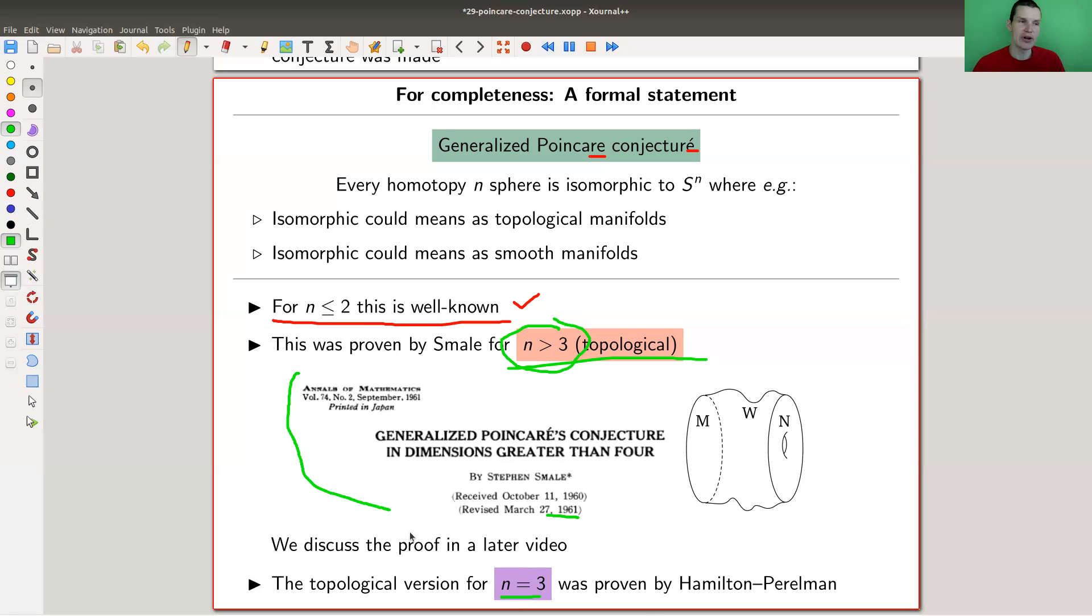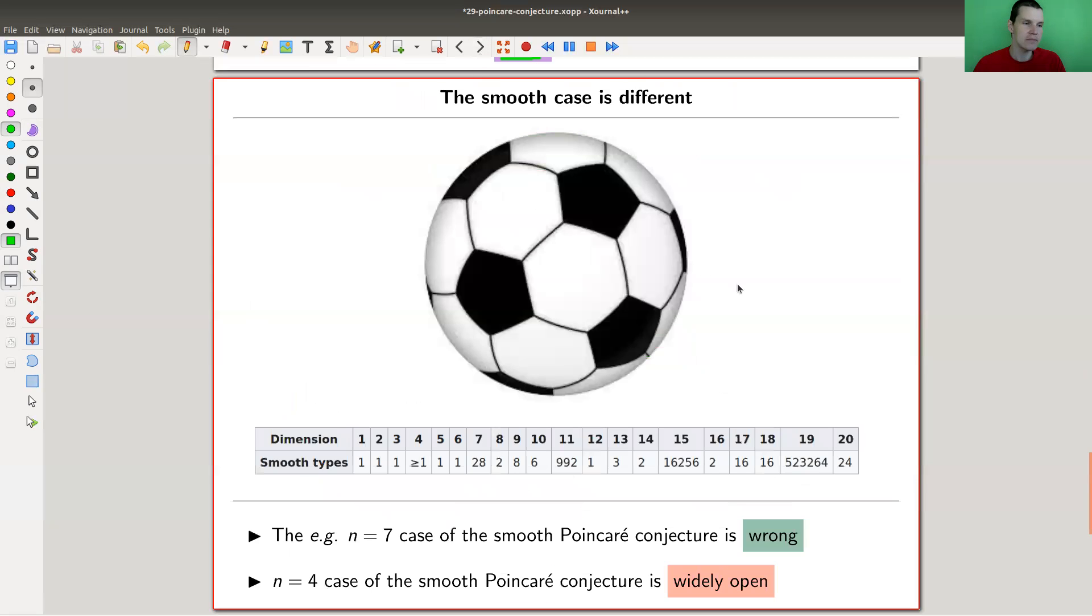It shows you that the Poincaré conjecture was not just a silly conjecture. The Poincaré question was not just a silly question, but people really worked on this very, very hard.